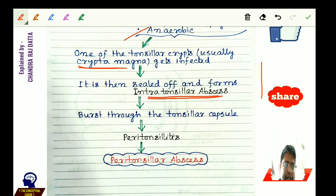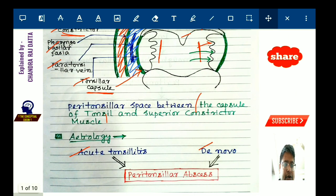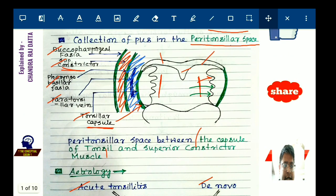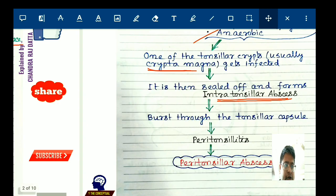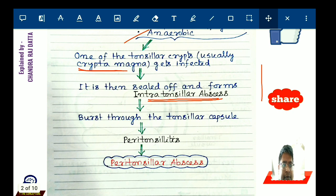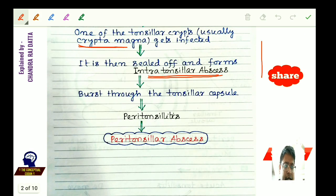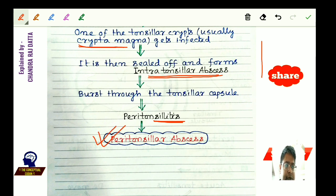The intratonsillar abscess then bursts through the tonsillar capsule, reaching the peritonsillar space — the space between the tonsillar capsule and the superior constrictor muscle. This sets up an inflammation called peritonsillitis, and ultimately the collection of pus in the peritonsillar space is called peritonsillar abscess. This is the etiopathogenesis.